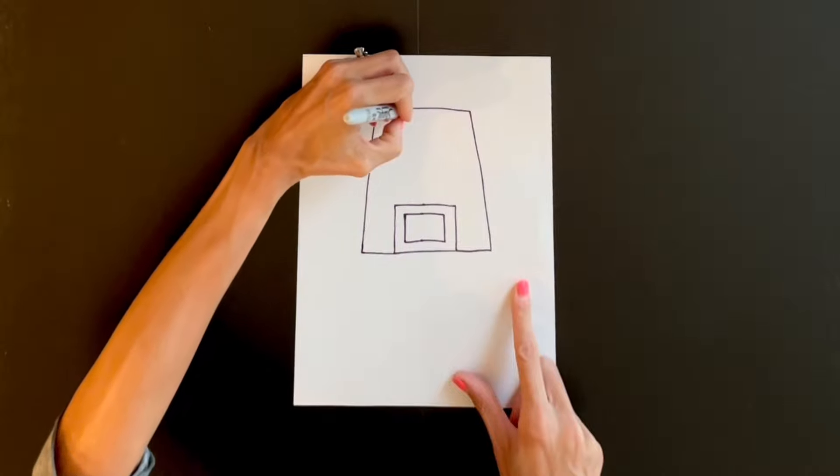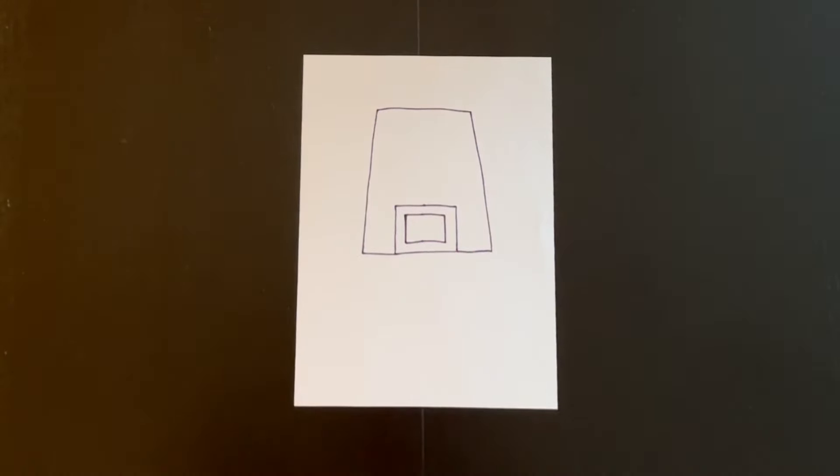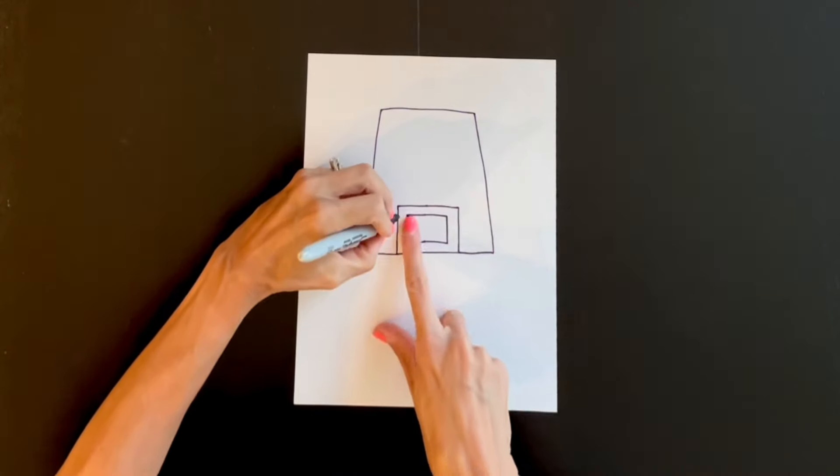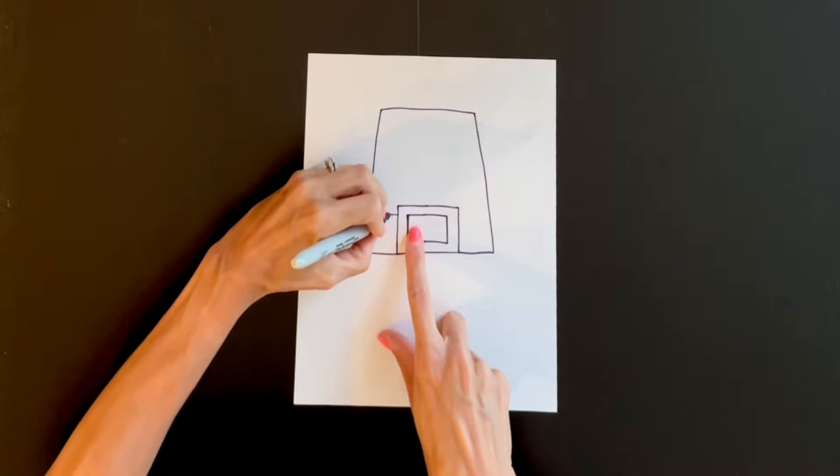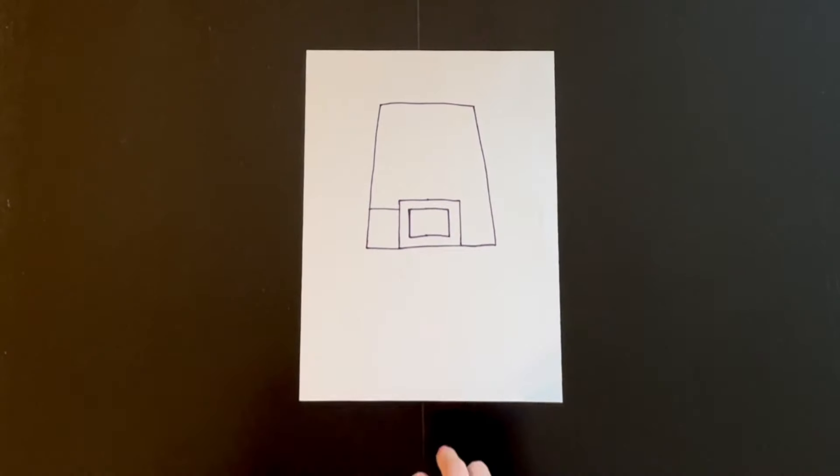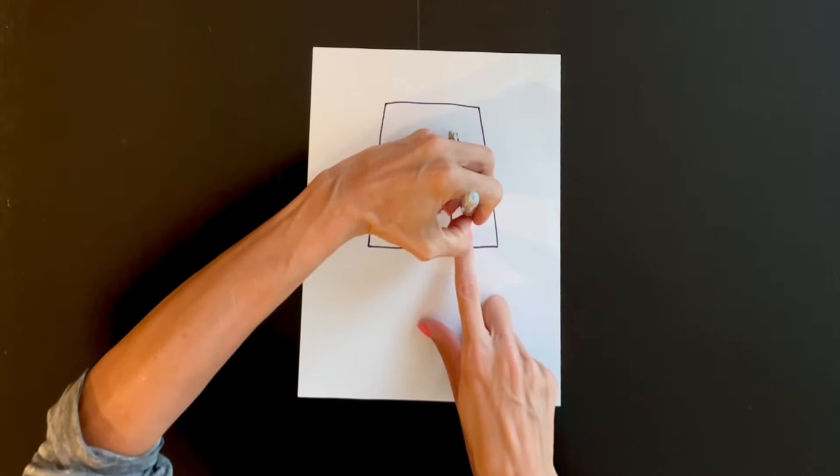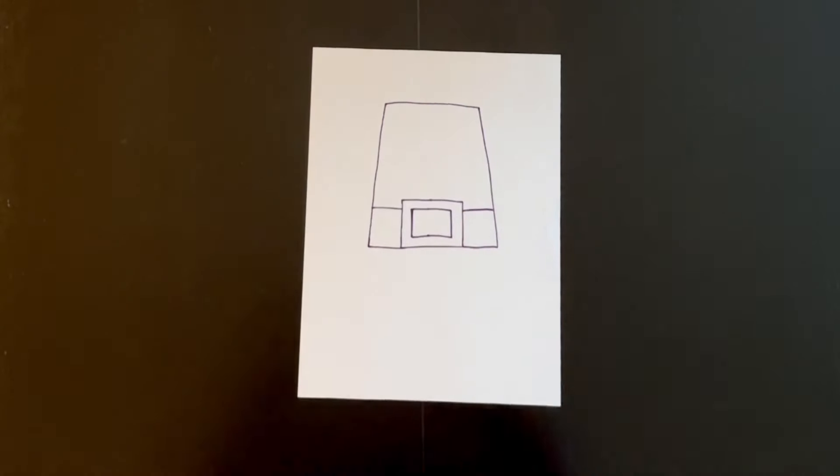Now let's go ahead and just connect those two lines. Now right about even with this line right here I'm going to jump over and I'm going to draw another line coming across. Same thing on this side, I'm going to draw a line coming straight across.